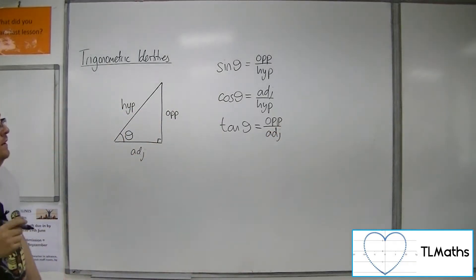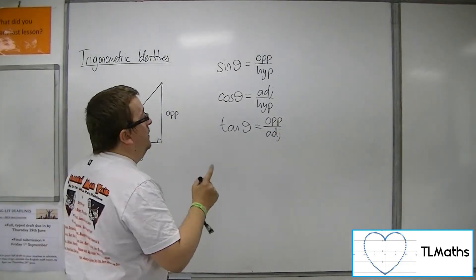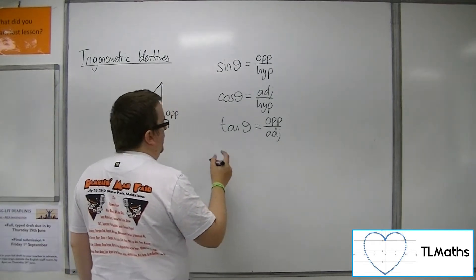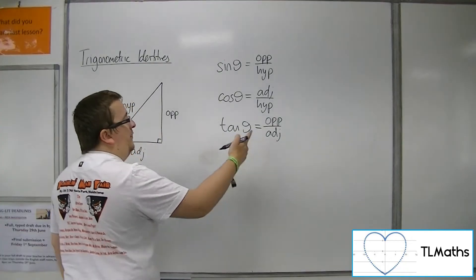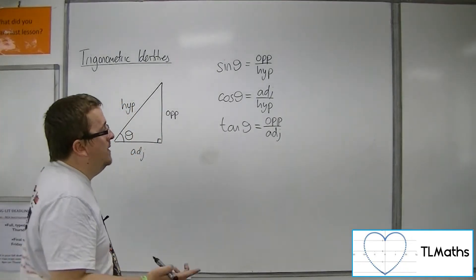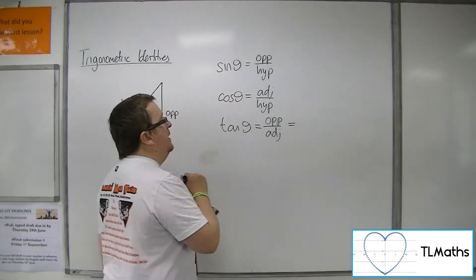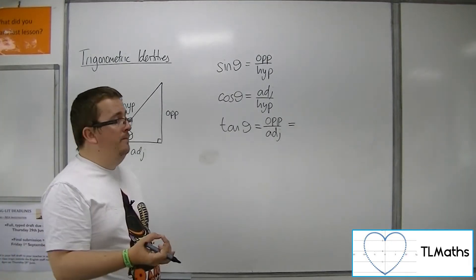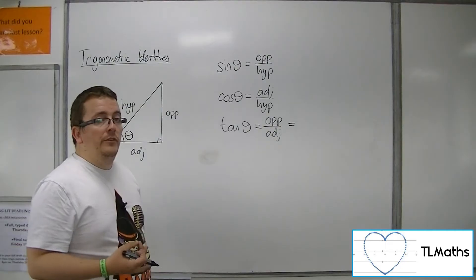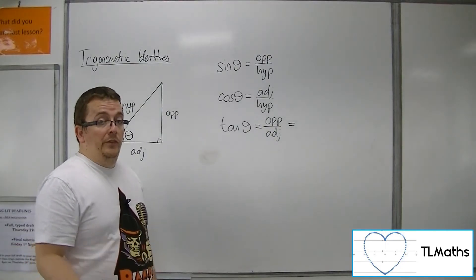Now, seeing as tan here is the opposite over the adjacent, what you could do is divide top and bottom of that fraction by the hypotenuse, given that the hypotenuse isn't going to be zero.